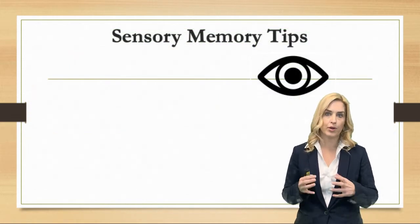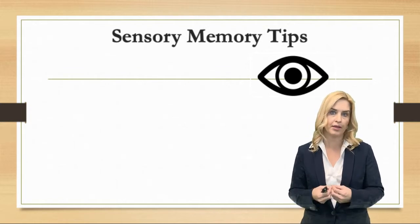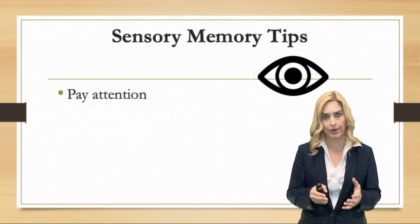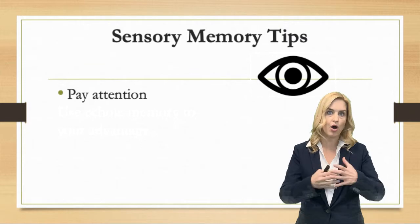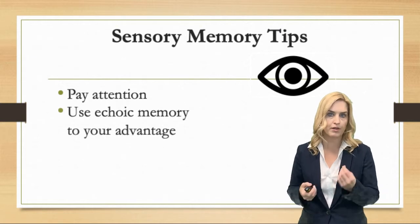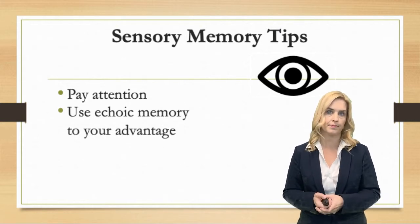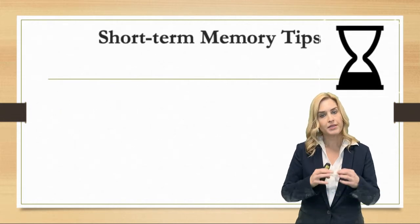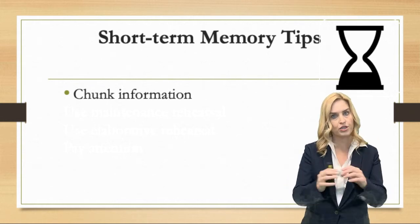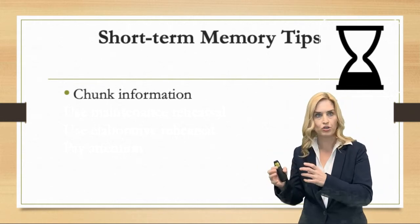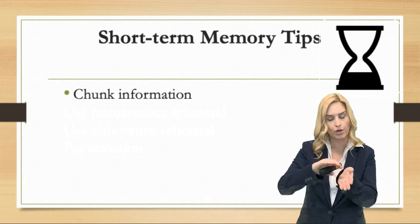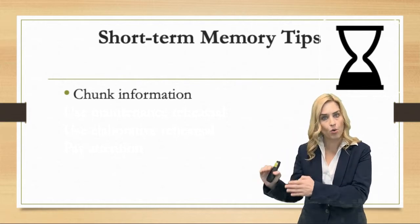Some things that can help us enhance our sensory memory — the biggest one is to pay attention. If we focus on it, we are more likely to remember it. Attention plays a key role in all of the processes of memory. Also, using echoic memory to our advantage, knowing that we can hold on to something for two to four seconds. With short-term memory, we can chunk information — like phone numbers being chunked into three digits and then four digits — which helps us organize information and encode it into long-term memory in an organized way.